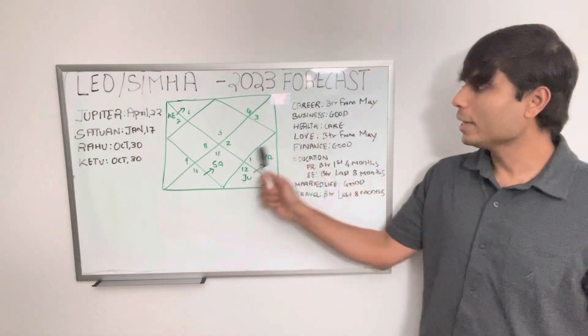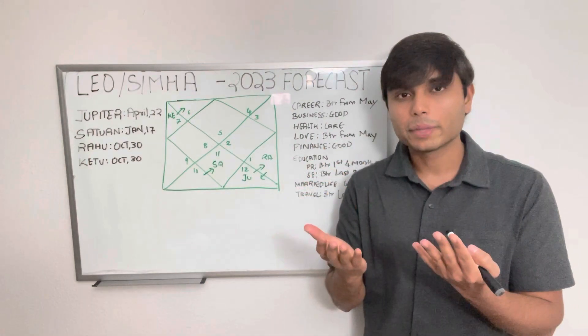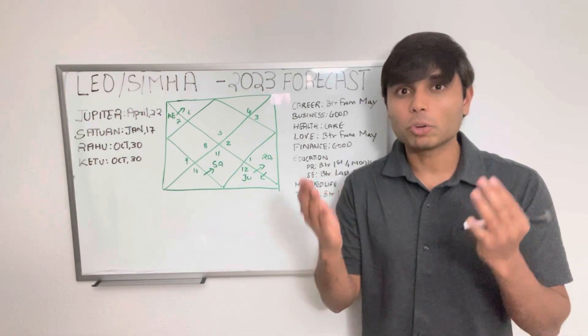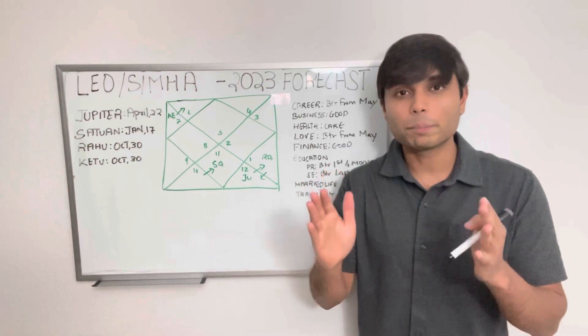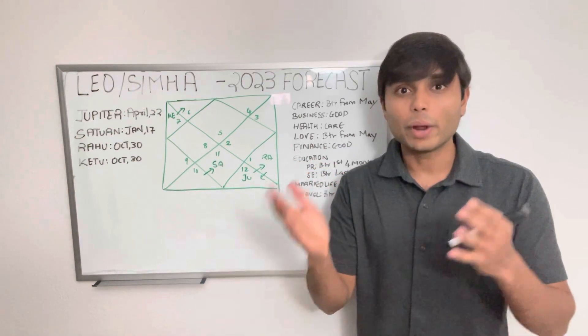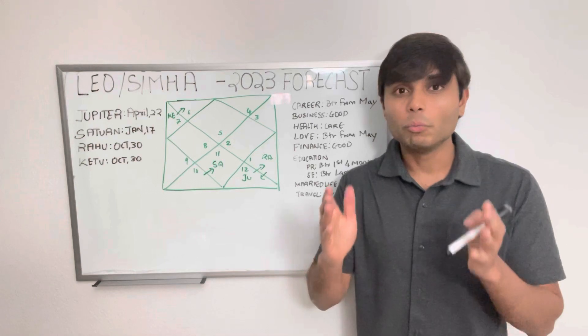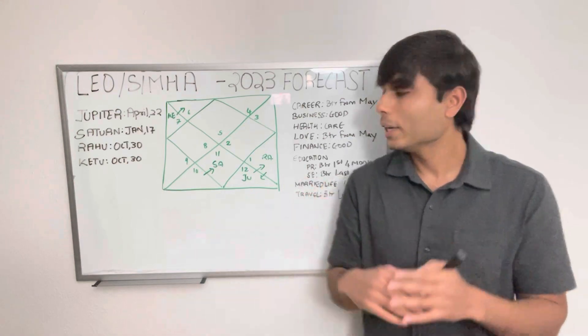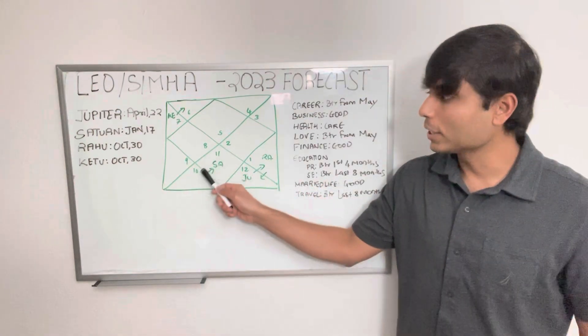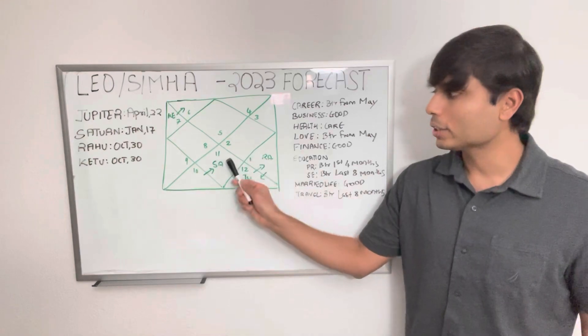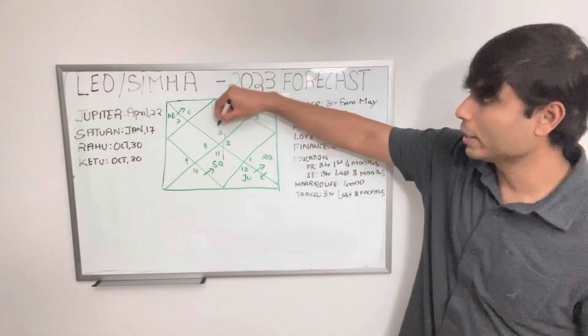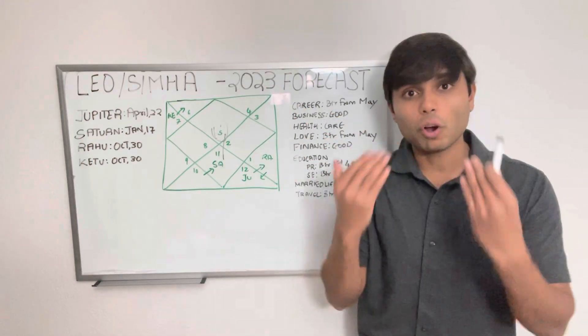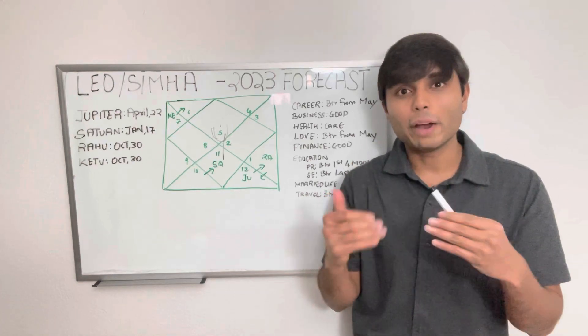If we look at health, then you have to be careful throughout the year. Try not to ignore any acute health issues if something was to arise, and make sure to get the proper treatment when needed. Getting regular wellness checkups would be beneficial, and doing yoga, meditation, and exercise will be helpful because the lord of your sixth house, Saturn, although strongly placed in the seventh house, will be directly aspecting your ascendant, which will fall on the strongest enemy sign Leo. So you have to be watchful of your health.